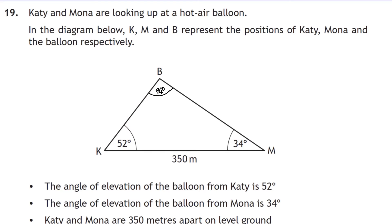We need at least two sides before we can extract the height, so we use the sine rule to find side KB (Katie to balloon). With only one known side, the sine rule is: x/sin 34 = 350/sin 94. Cross-multiplying: x × sin 94 = 350 × sin 34, then dividing by sin 94 gives x ≈ 196.2 metres.